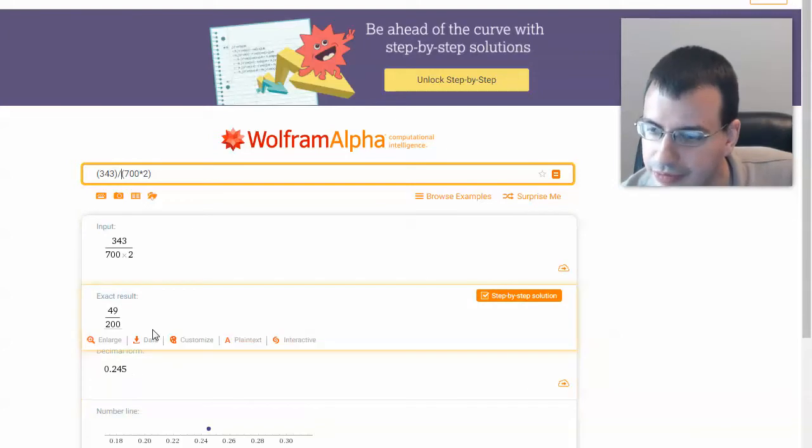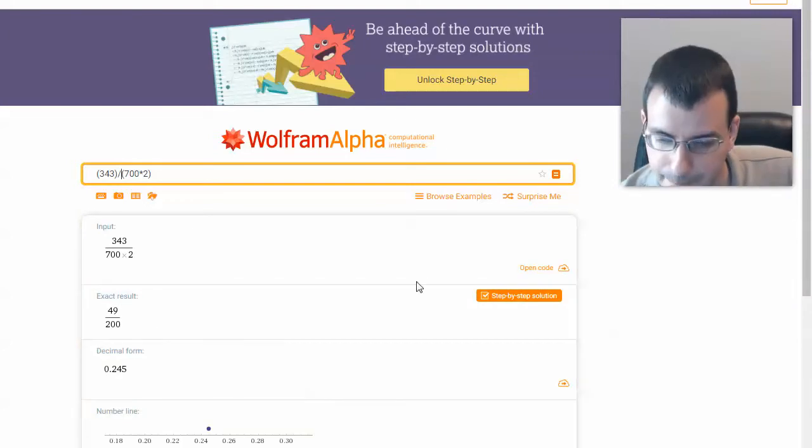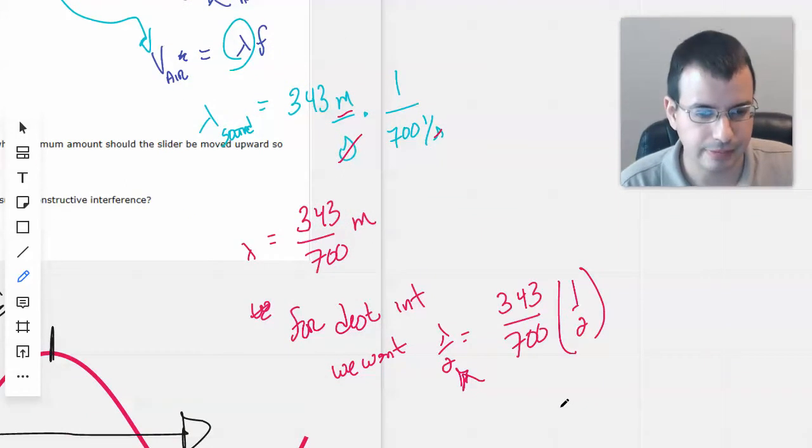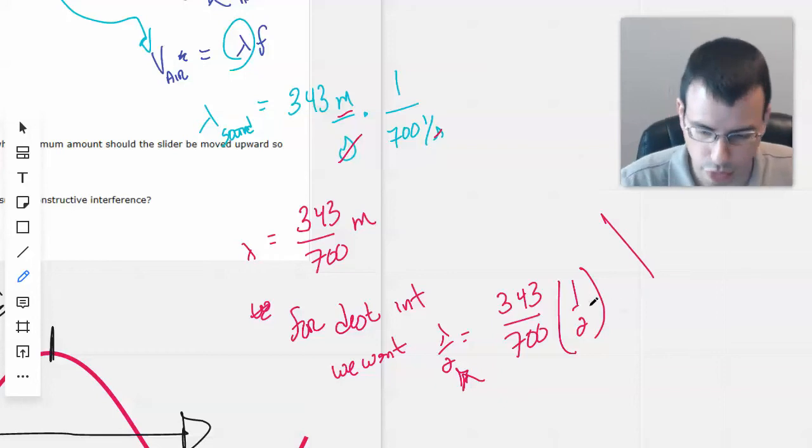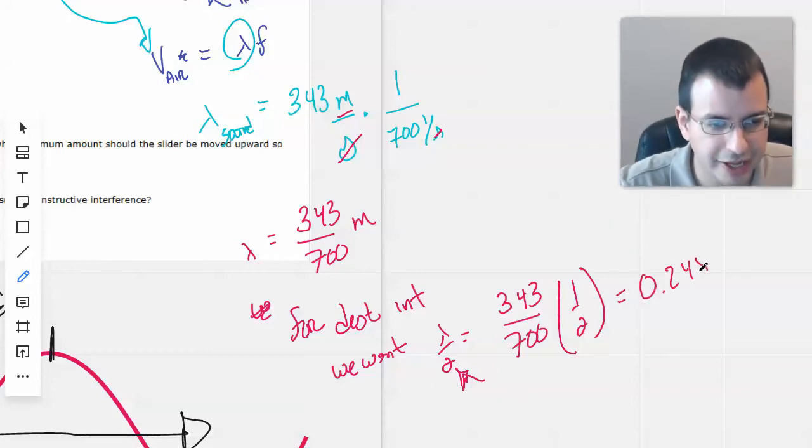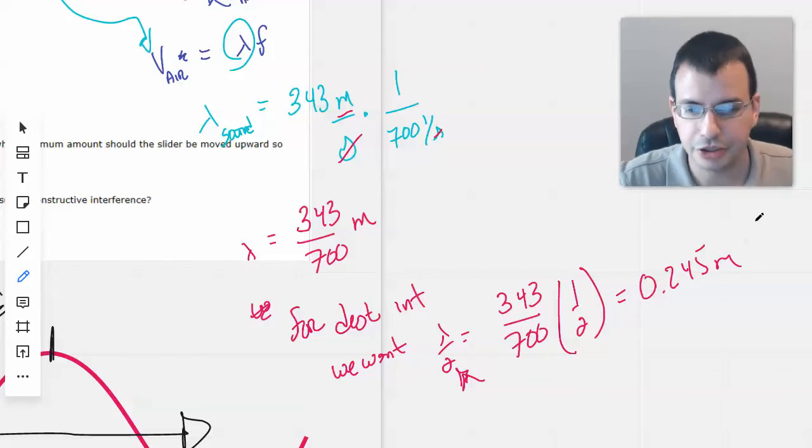And we get a, ah, fine, I'll divide. 0.245. Okay, I'm good with that.